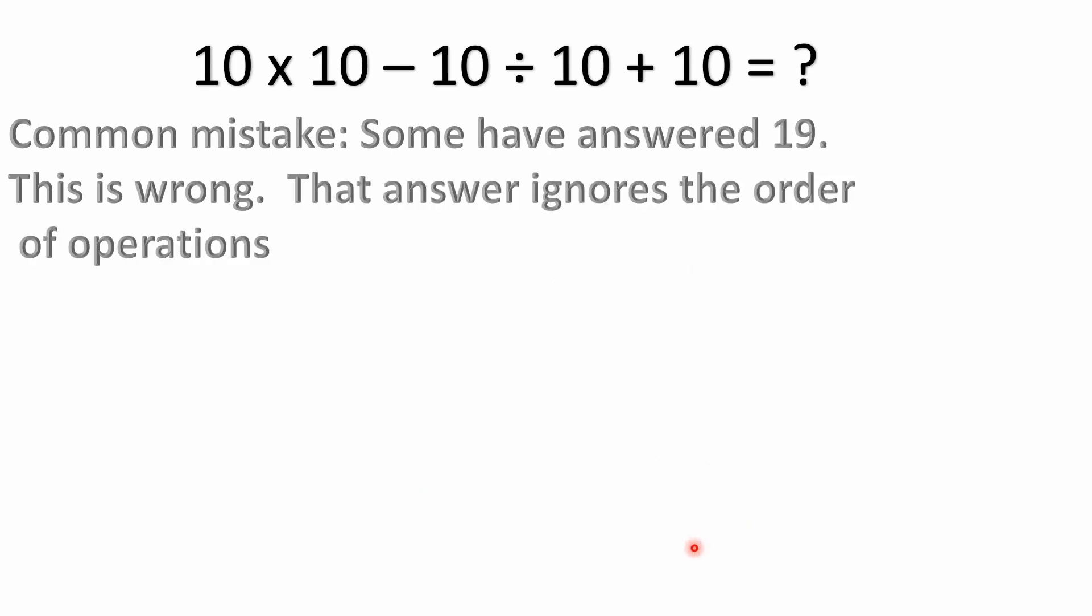Another common mistake: some people will answer this is 19. And that's also wrong. That answer ignores the order of operations. And you'd have to be doing these operations out of order.